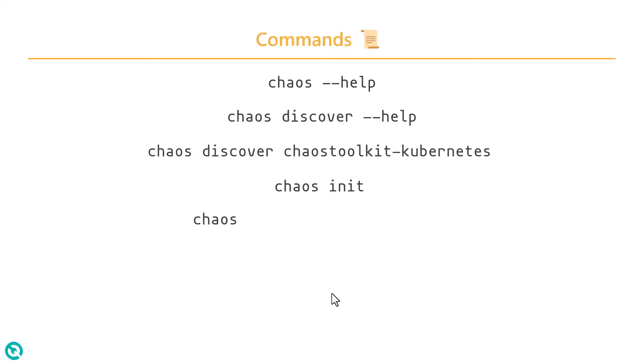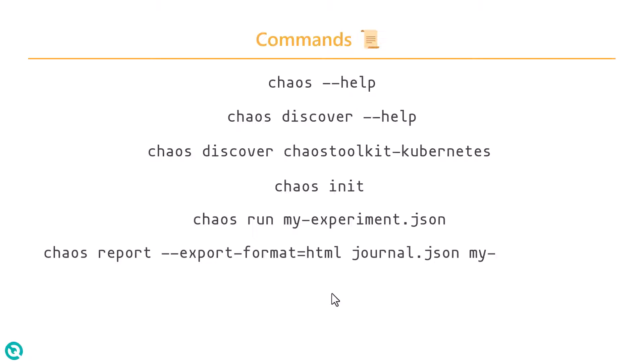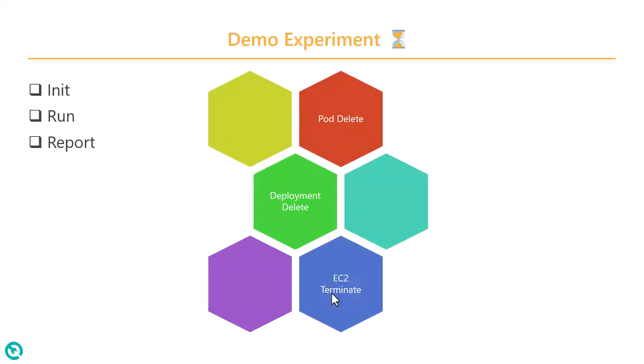After initiation, you will define your experiment in JSON format. Then you will use chaos run with your file, which will execute your experiment in the order it appears. After execution is done, you can run chaos report to export your result into HTML format or PDF.